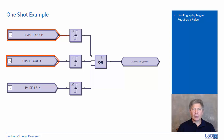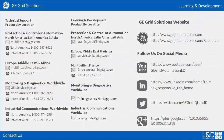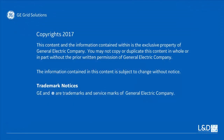If another condition occurs while the first one is active, the oscillography will trigger for the next condition and so on. With the one-shot in a circuit to the OR gate, it provides an opportunity for all triggers to be recorded by the oscillography.